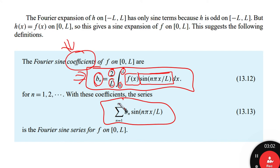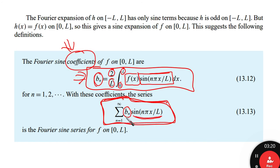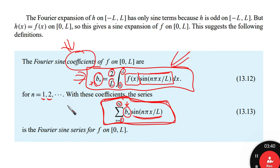These coefficients are going to be used in the expansion of the series. The Fourier series expansion of the function is going to be the summation of b_n times sine(n pi x over L), where n takes values from 1 to infinity — any number of terms that we want. This b_n is the coefficient we already defined, and n takes integer values 1, 2, 3, 4, and so on.